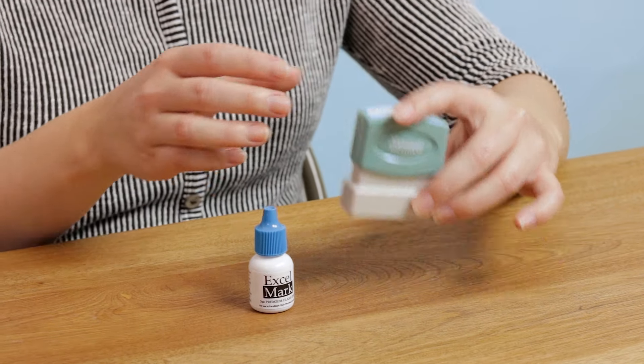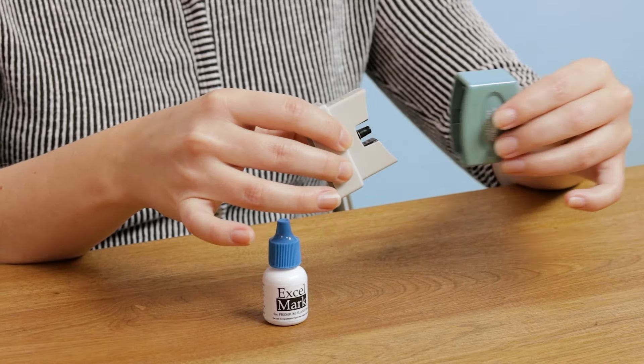If your pre-ink stamp does not have a sliding cartridge, then remove the handle of the stamp.